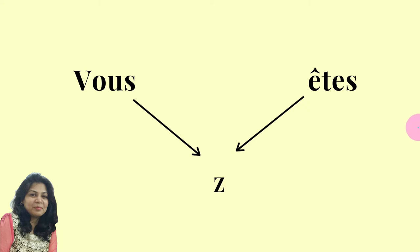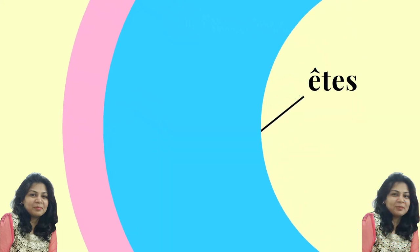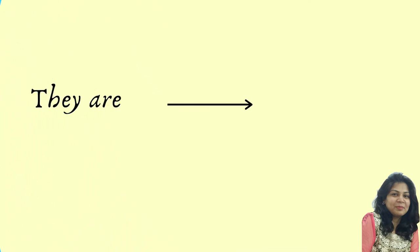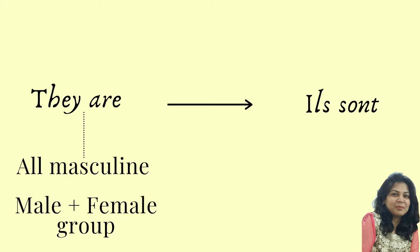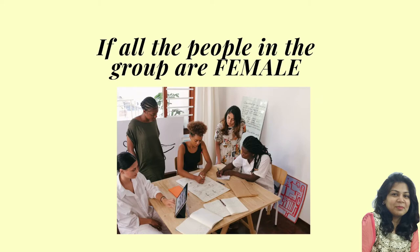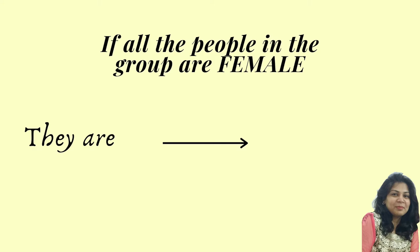Then they are, if I want to address third person plural, so it will be ils sont. And we must remember that this ils, this they, is either all masculine or it could be a mixed group of males plus females. Now if the whole group is female group, all the people in the group are female, I want to say they are, so now we will address them by saying elles sont.